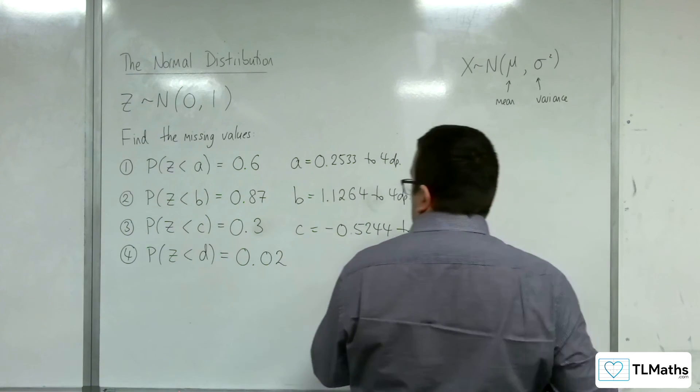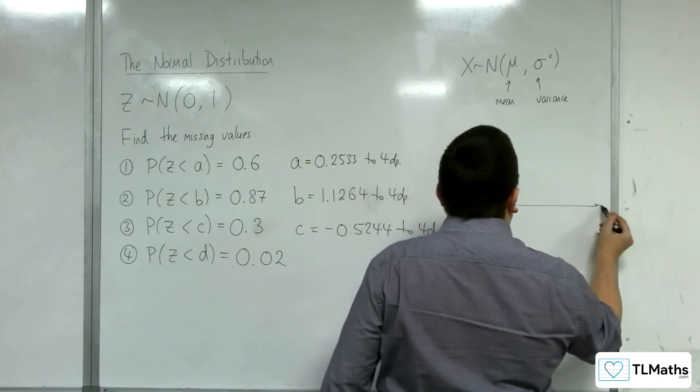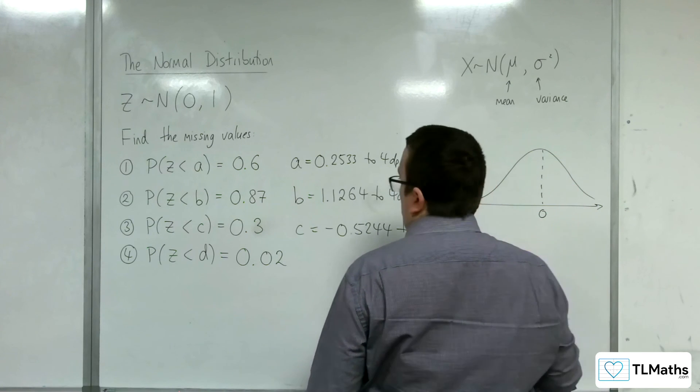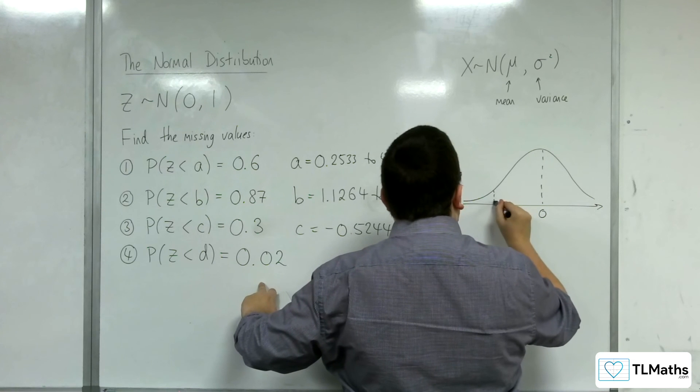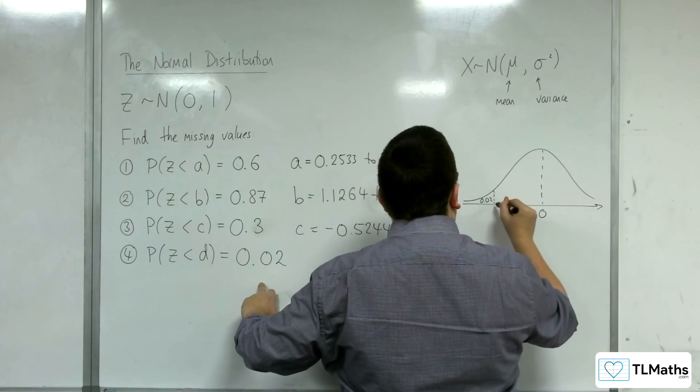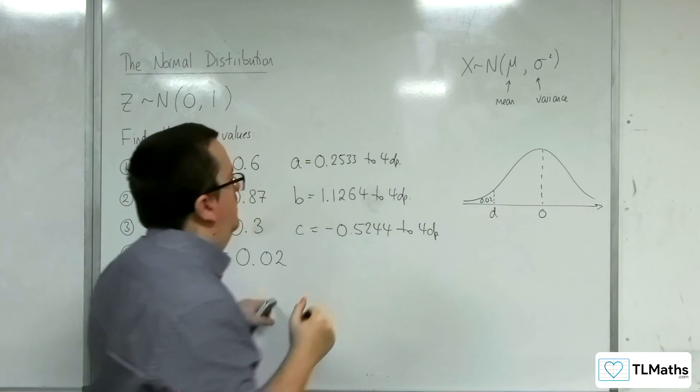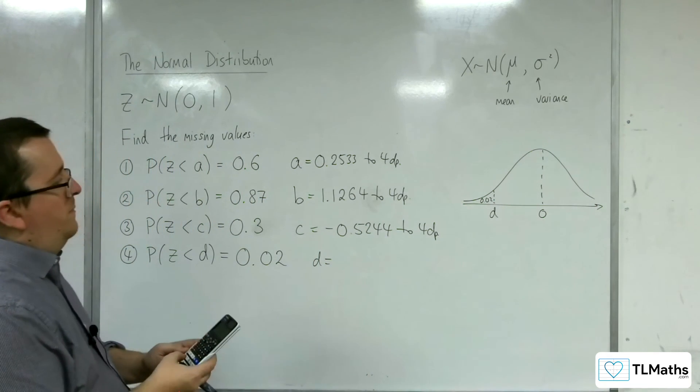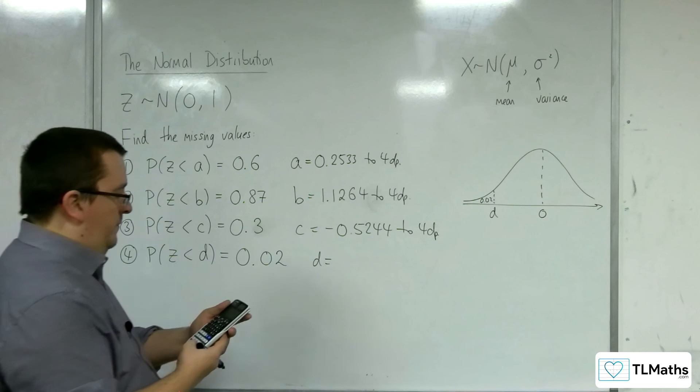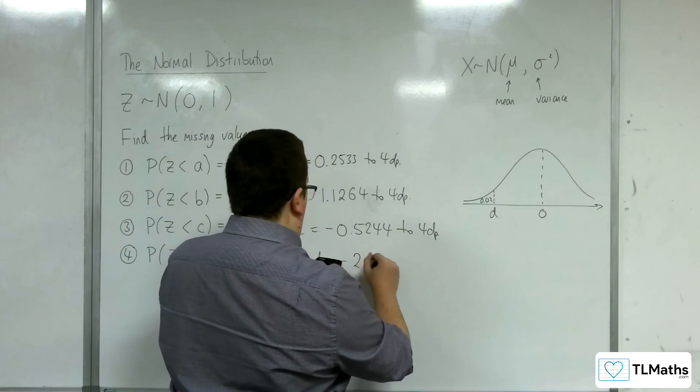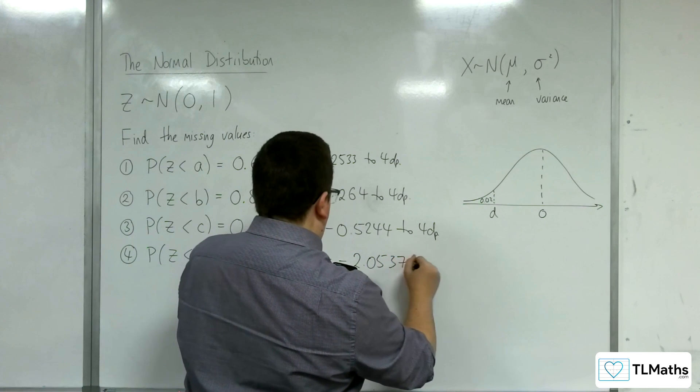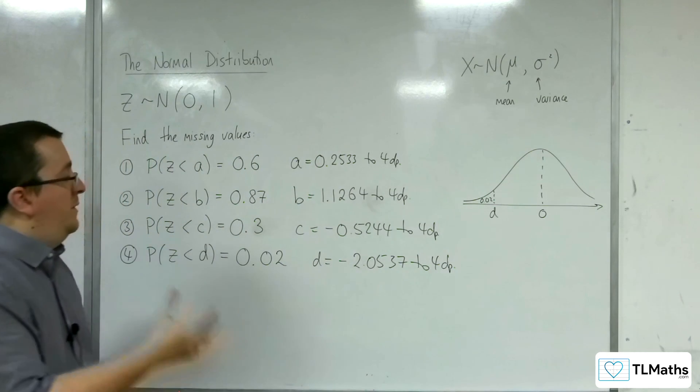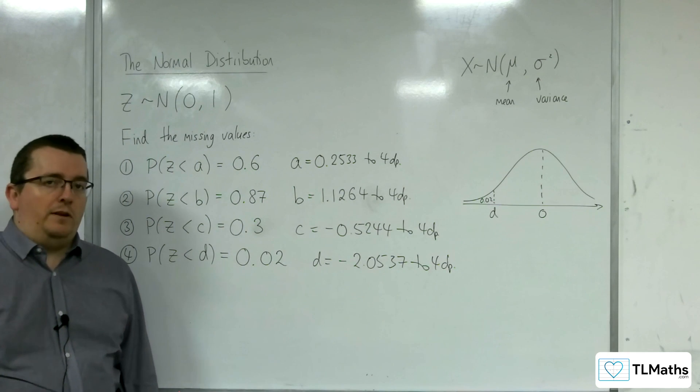Last one. Probability of z being less than d is 0.02, so 0.02 is all the way down here, if that's d. I just need to go back into the option, change the area to 0.02, and we get minus 2.0537 to 4 decimal places. And so that's how we can find these values on the Casio class words.